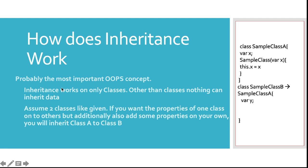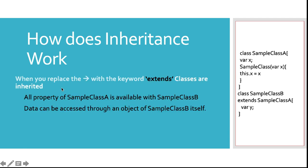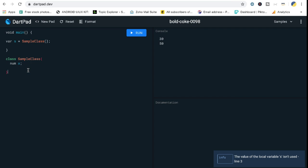There's a simple notation shown as an arrow mark, which we're going to replace with the `extends` keyword. Sample class A has a variable called X and its own constructor. Sample class B is now extending the data attributes of sample class A. Sample class B will have access to variable X and will additionally have its own variable Y. That's the simple idea of extending or inheriting data from one class to another.